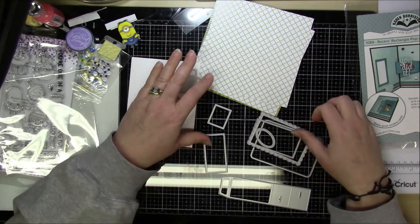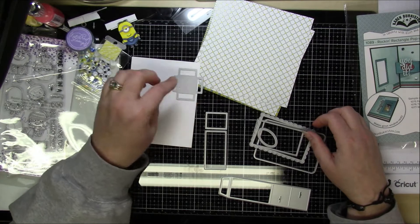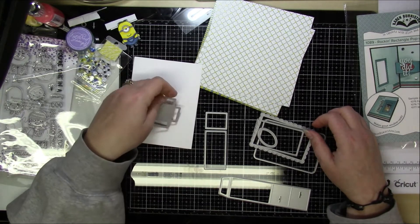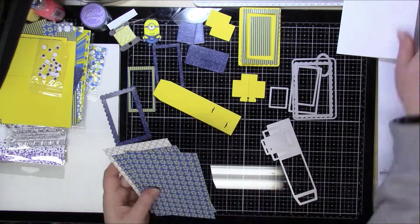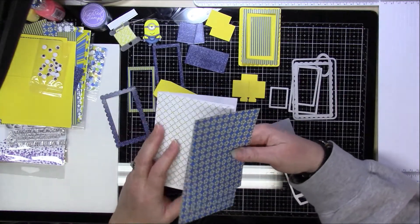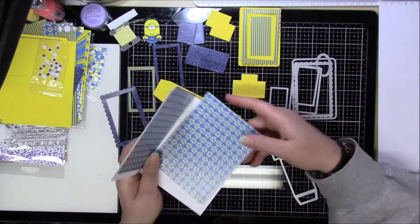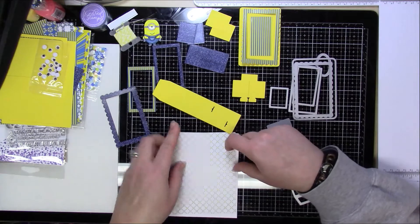So I started out by cutting out the panels for an A2 size card so it's four and a quarter by five and a half. And the panels I cut down to four inches by five and a quarter. And I cut three of them, two for the inside and one for the outside front cover of it.